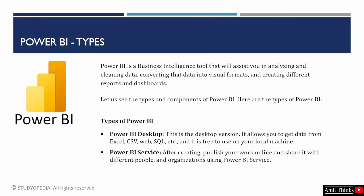Here are some of the types of Power BI. First is Power BI Desktop. We will be working on the Power BI Desktop version only. It is easy to install on your local system. Using this, we can easily get data from different sources like JSON, CSV, Excel, even from the cloud.